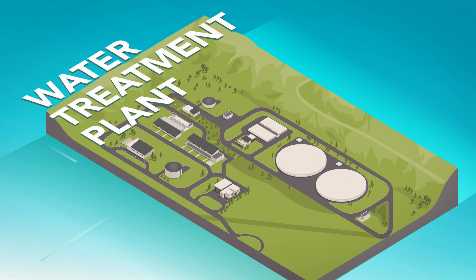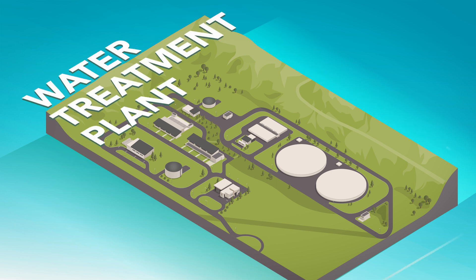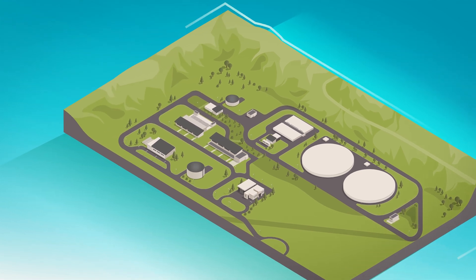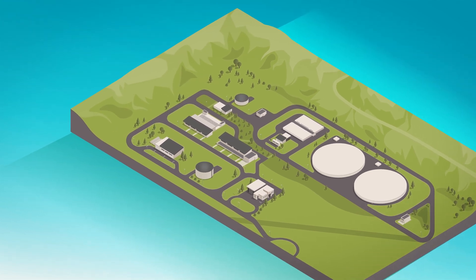Denver Water cleans and purifies its water at its treatment plants before sending the water to its customers. Each plant has several buildings for each step in the treatment process: coagulation, flocculation, sedimentation, filtration, and disinfection.